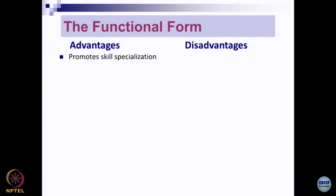It promotes skill specialization because people keep working in one department, and when they keep working in that department, they keep gaining experience and expertise within it for a long period of time. This process also ensures that we recruit people who have a particular type of skill. So in both ways — in recruitment as well as in general functioning — the functional form of organization design promotes skill specialization.